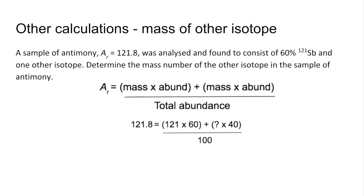So the numbers go in this time like that. So we've got the relative atomic mass already. We know it's 60% of 121. The other isotope's got to be 40%, but we don't know its mass. So I'm using a question mark there. So that rearranges to that. Question mark comes out at 123.